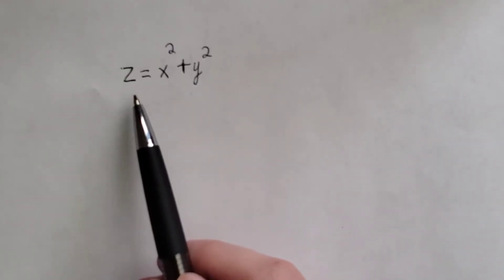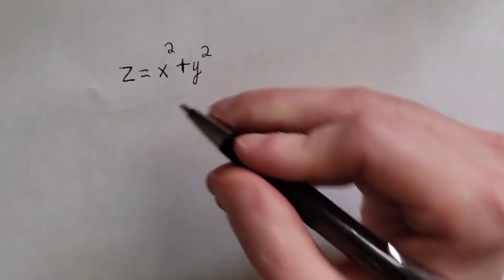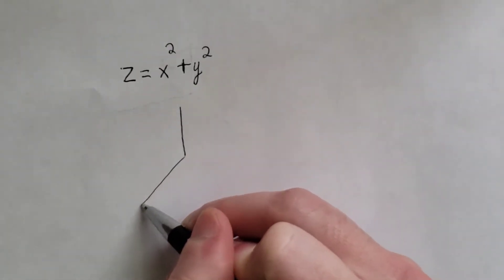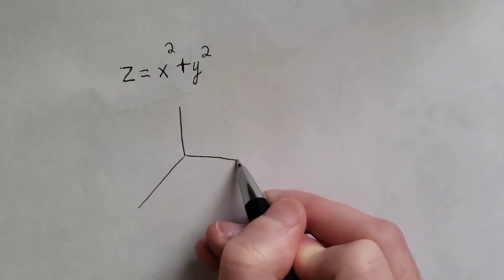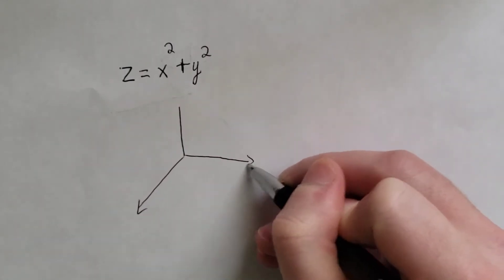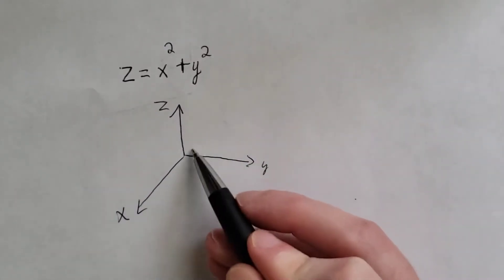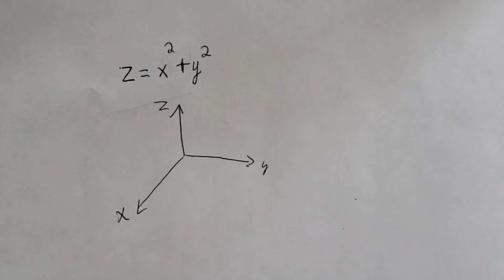In this video we want to continue with our discussion of the three-dimensional coordinate system. We follow up on the last problem we were working on, which was to sketch z equals x squared plus y squared. We can draw our x, y, and z axes all in the positive directions, and we have z equals x squared plus y squared.